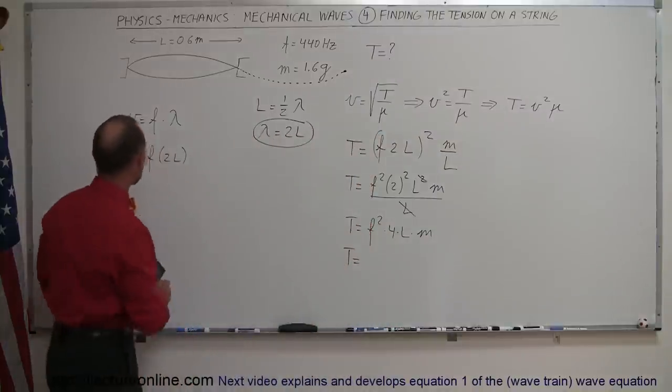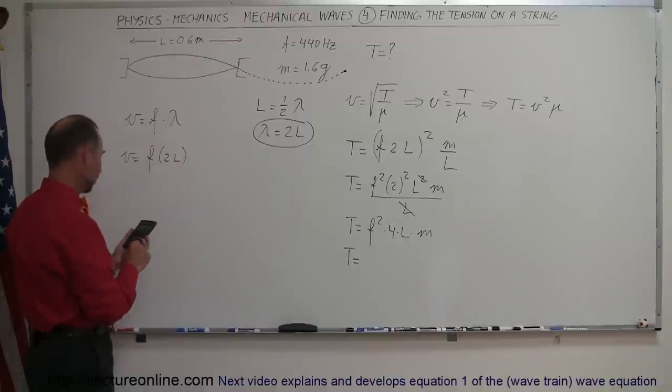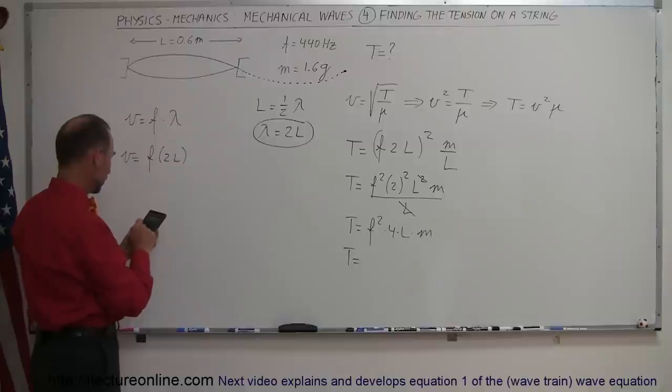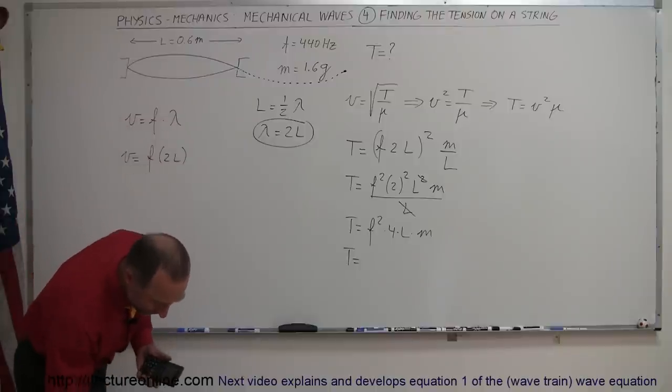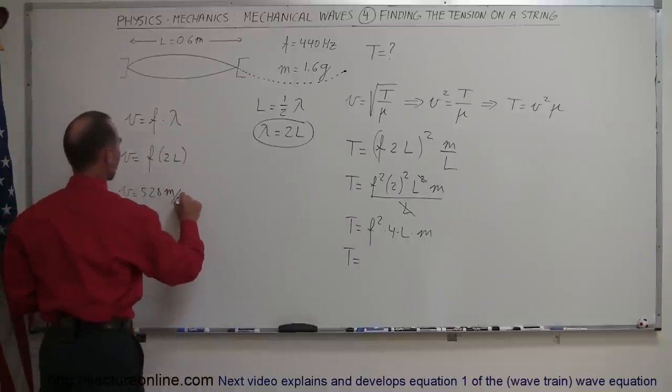Notice also we may want to get the velocity here just to get a feel for how fast that is. So the frequency was 440 times 2 times 0.6, equals that would be 528 meters per second. So velocity is equal to 528 meters per second.